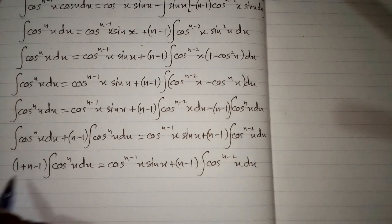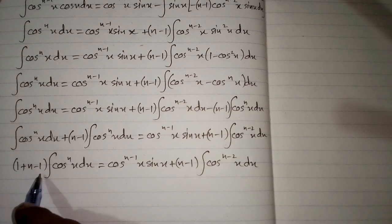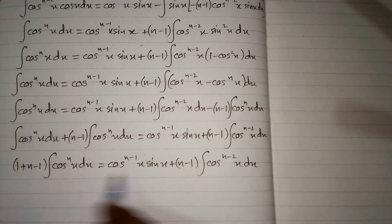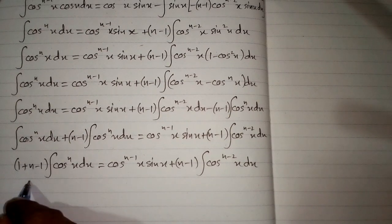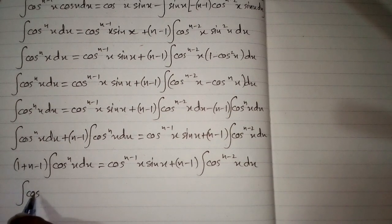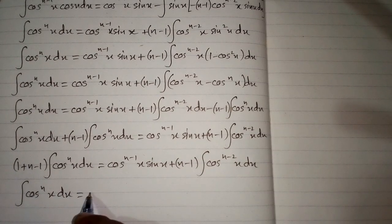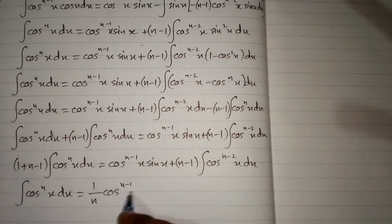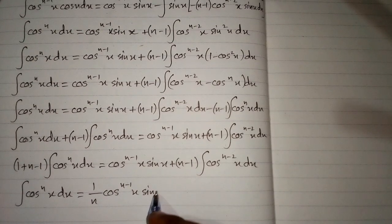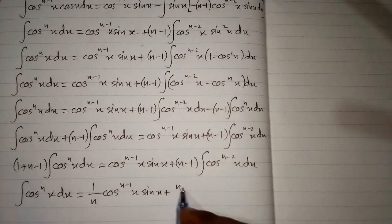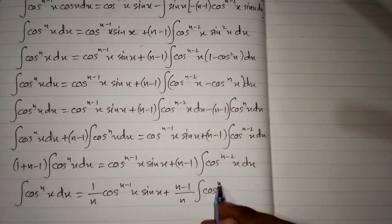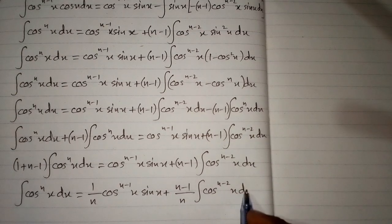Since 1 plus n minus 1 equals n, the coefficient of the integral is n. Dividing both sides by n, we have the integral of cosine raised to the power n equals 1 over n times cosine raised to the power n minus 1 times sine x, plus (n minus 1) over n times the integral of cosine raised to the power n minus 2 dx. This is the reduction formula for the integral of cosine raised to the power n.